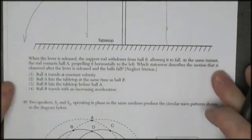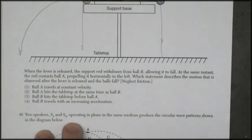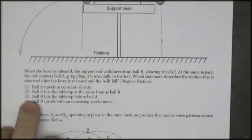So that's the lab. Maybe you remember it from class. Let's read what they want to know. When the lever is released, the support rod withdraws from B, allowing it to fall. At the same instant, the rod contacts A, propelling it horizontally. What statement describes the motion observed for the balls?